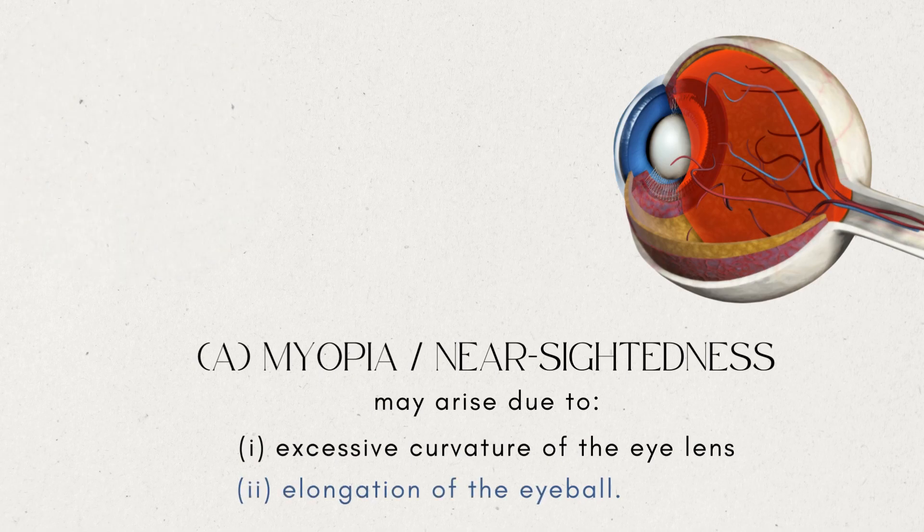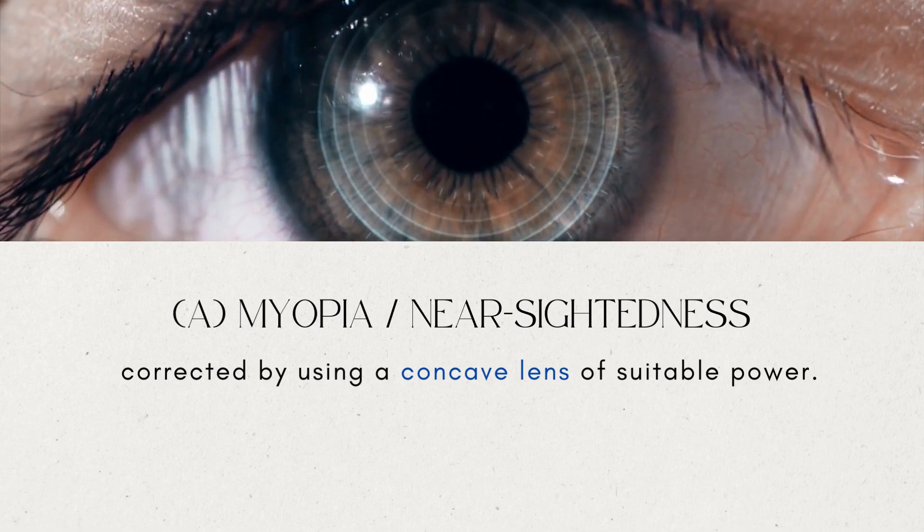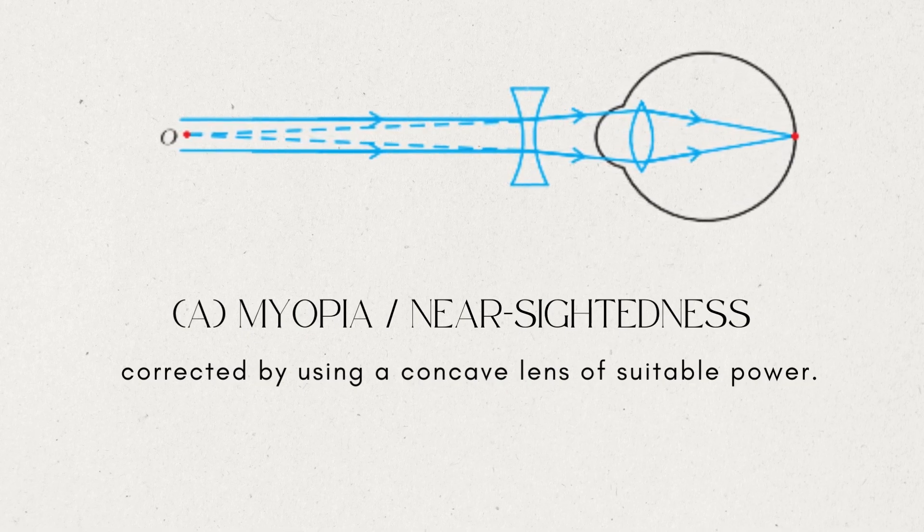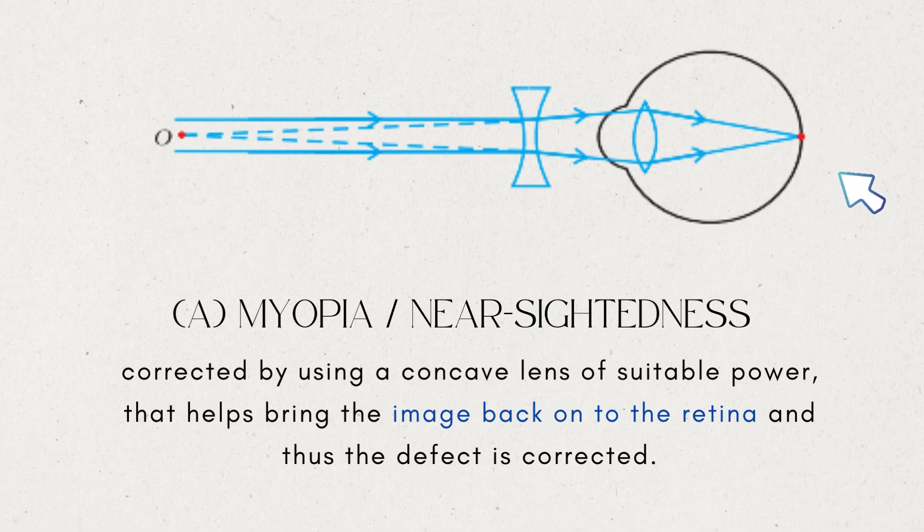This defect can be corrected by using a concave lens of suitable power. A concave lens of suitable power will bring the image back on the retina and thus the defect is corrected.